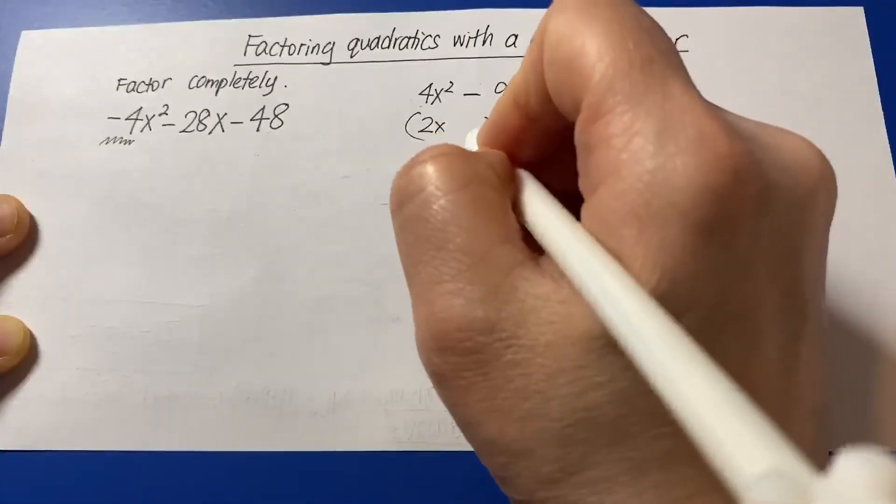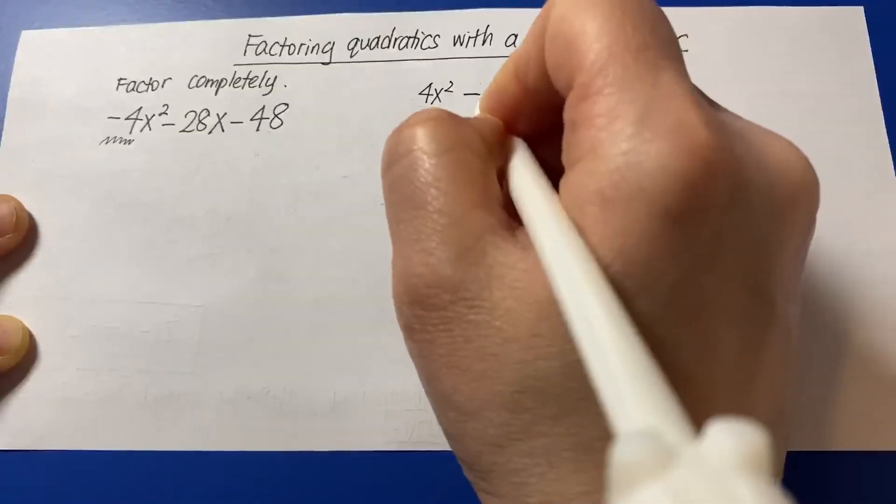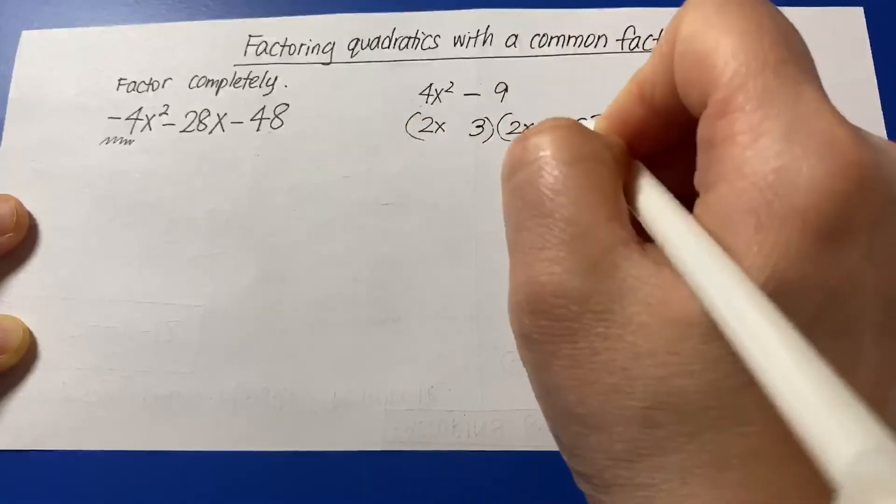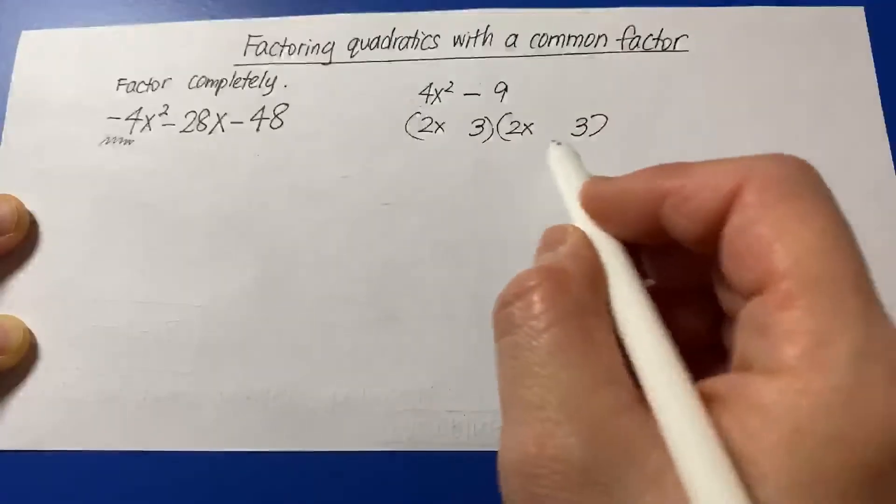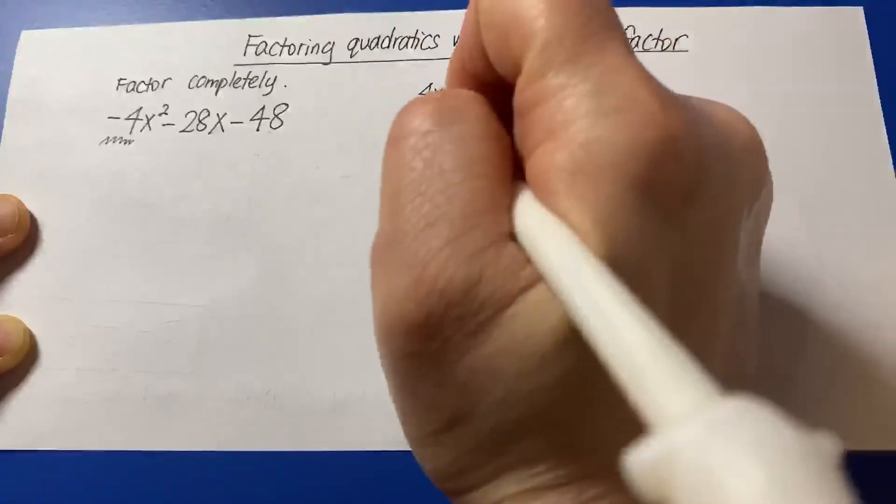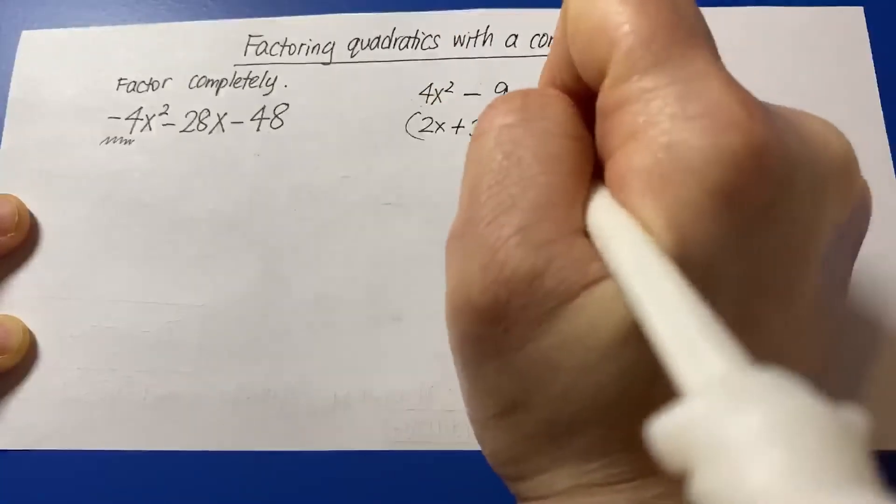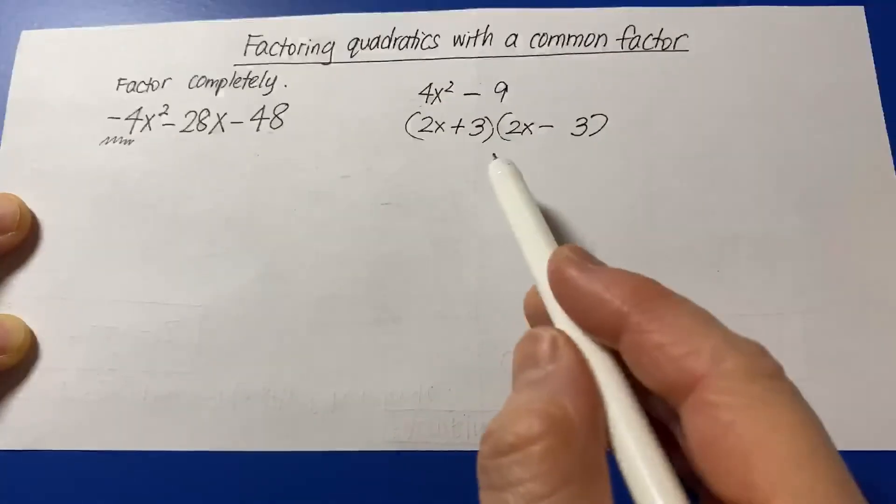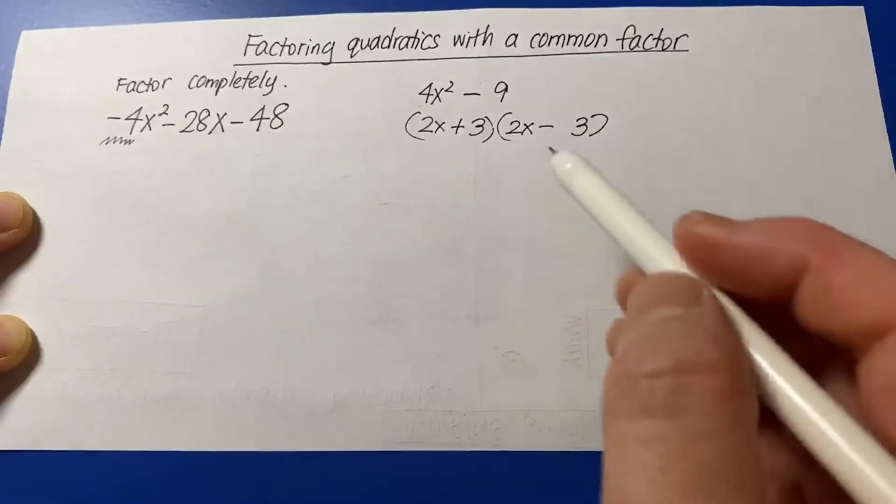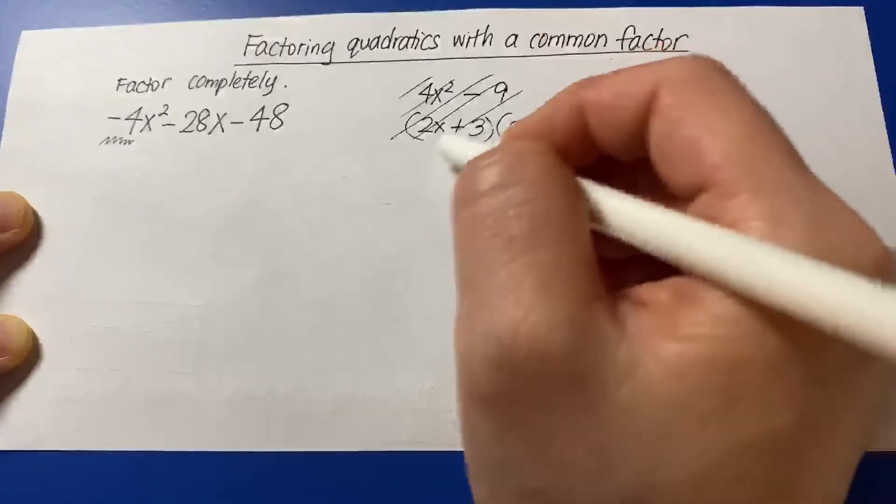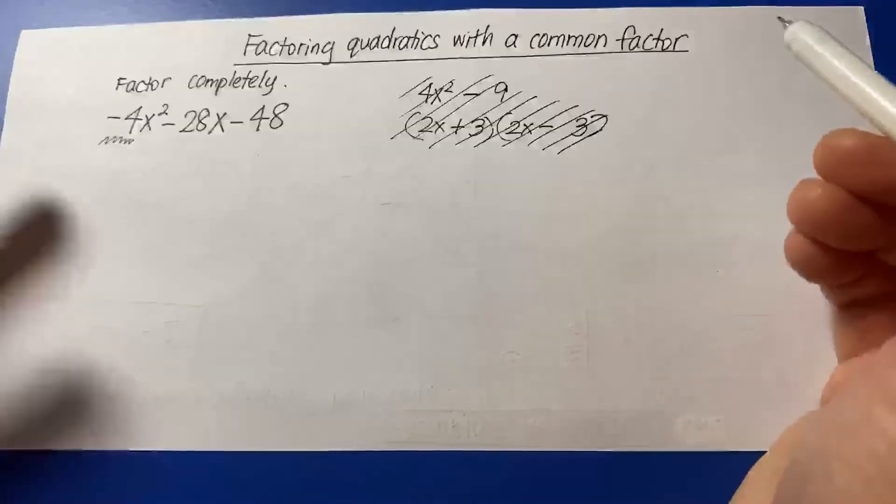And what two perfectly the same multiply to give us 9? 3 and 3. Therefore, they're perfectly the same. The only difference is the sign in between. So this is what we call the difference of perfect squares. I'm just going to x this out so we don't get confused with our current problem.